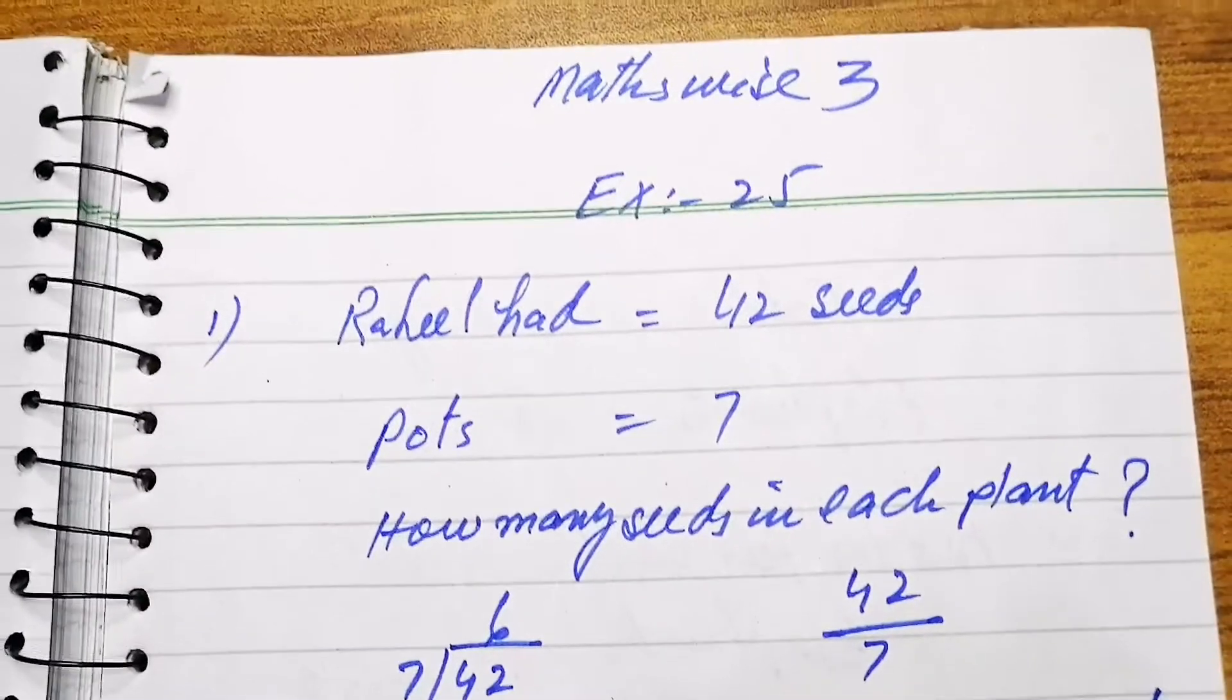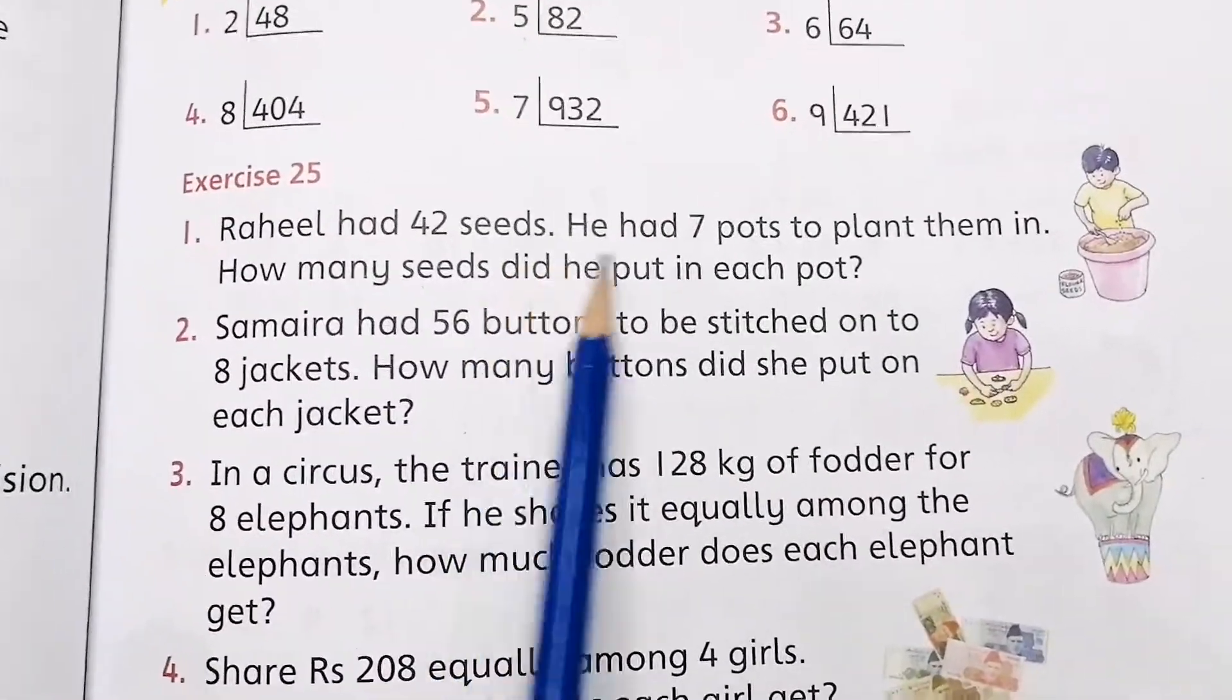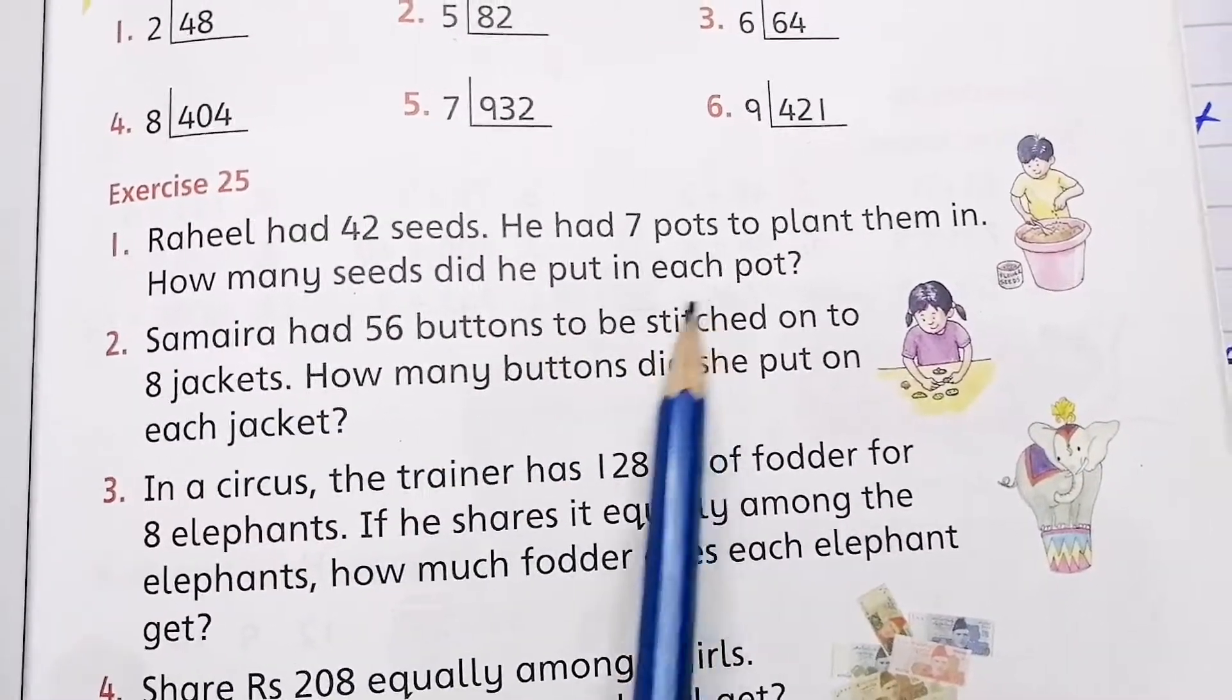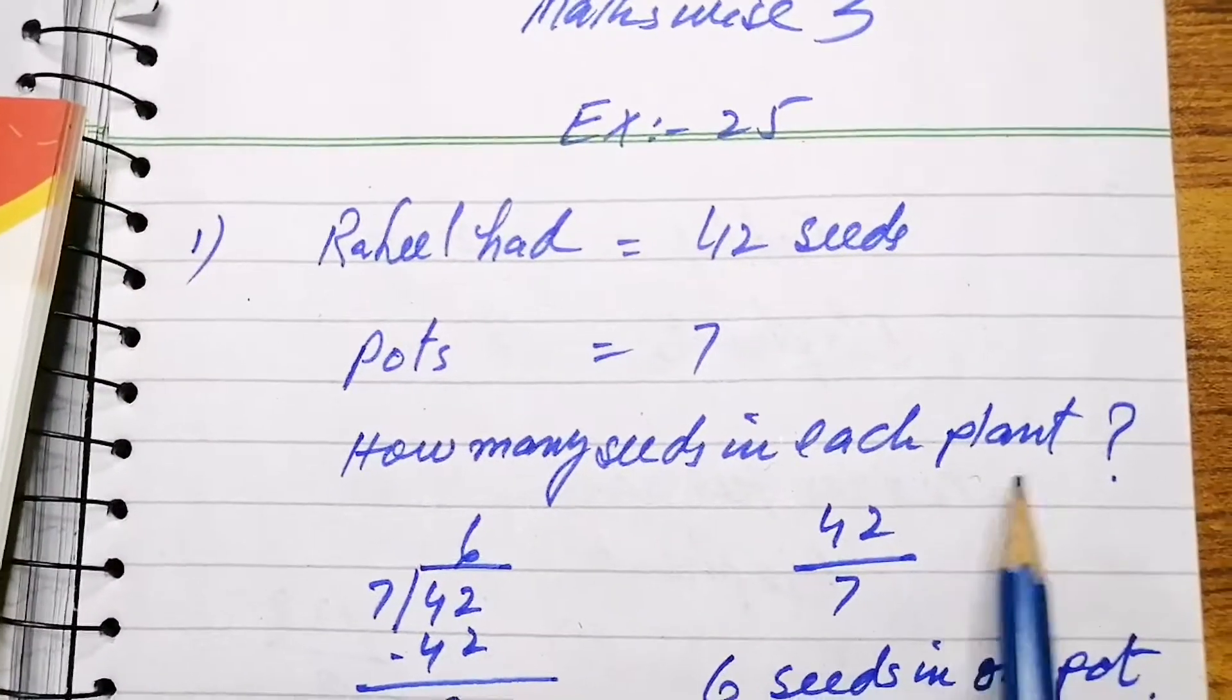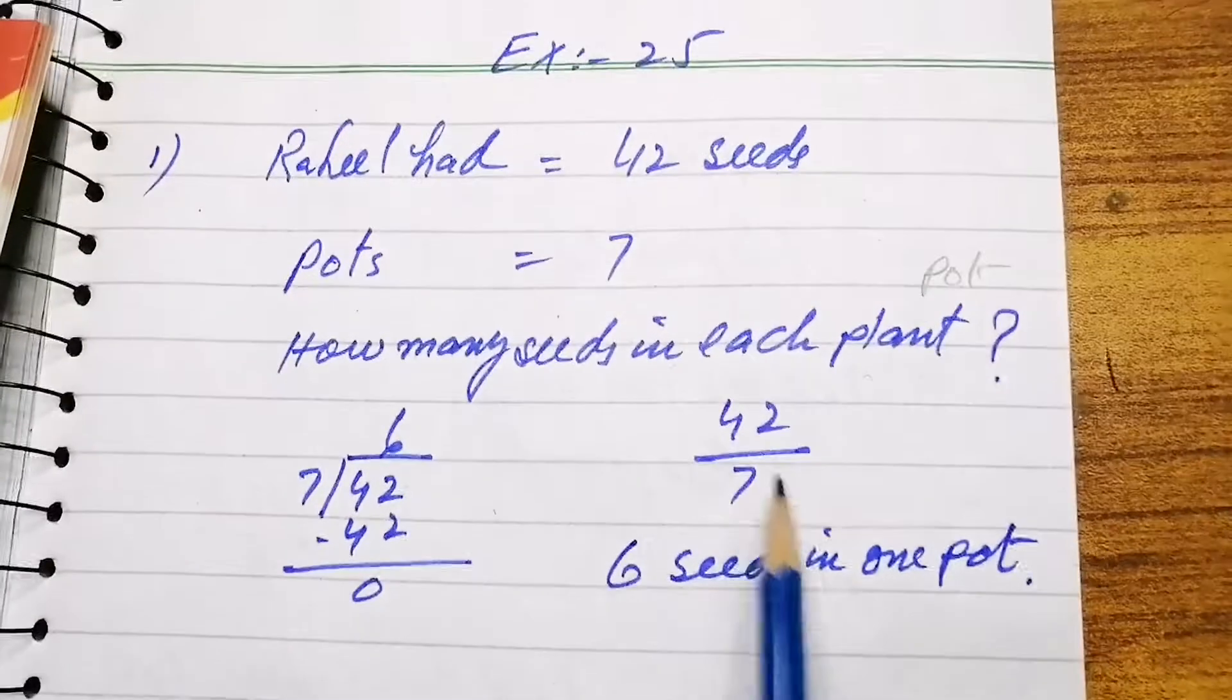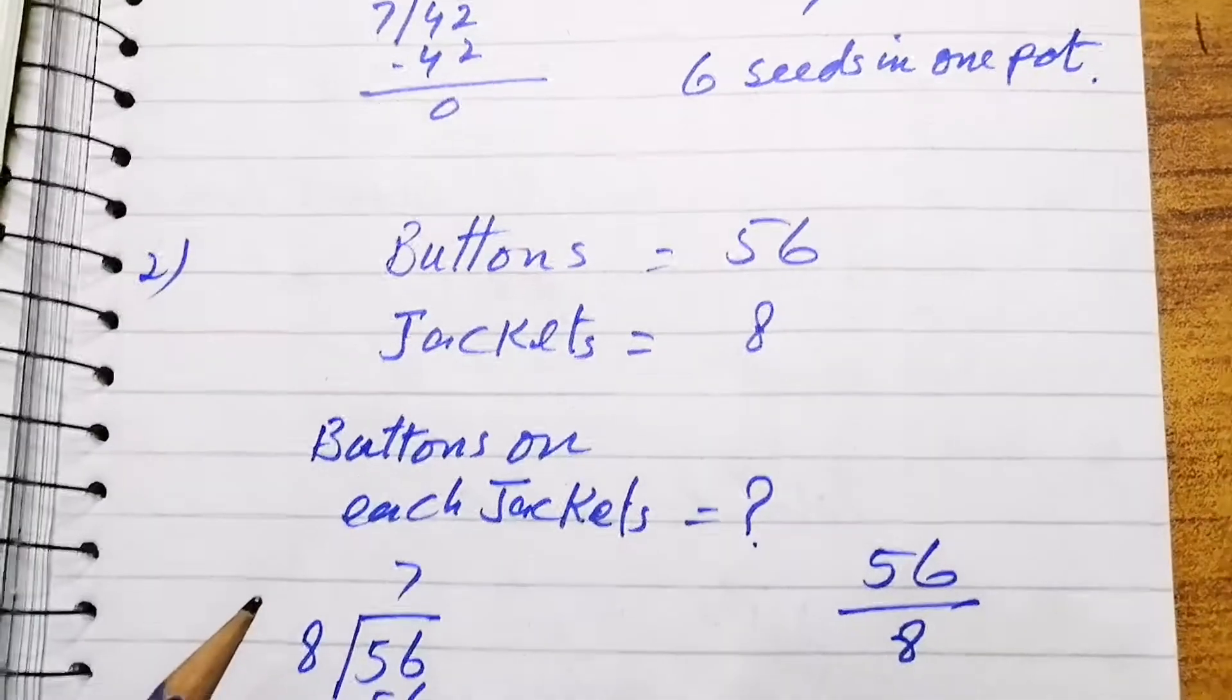Some word problems are given. Raheel had 42 seeds. He had 7 pots to plant them in. How many seeds did he put in each pot? 42 divided by 7. 7 6s are 42, so 6 seeds in 1 pot he will divide.